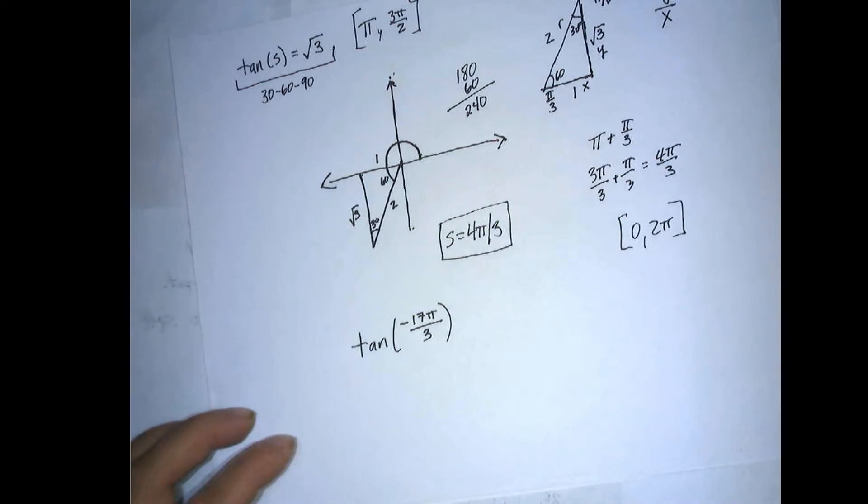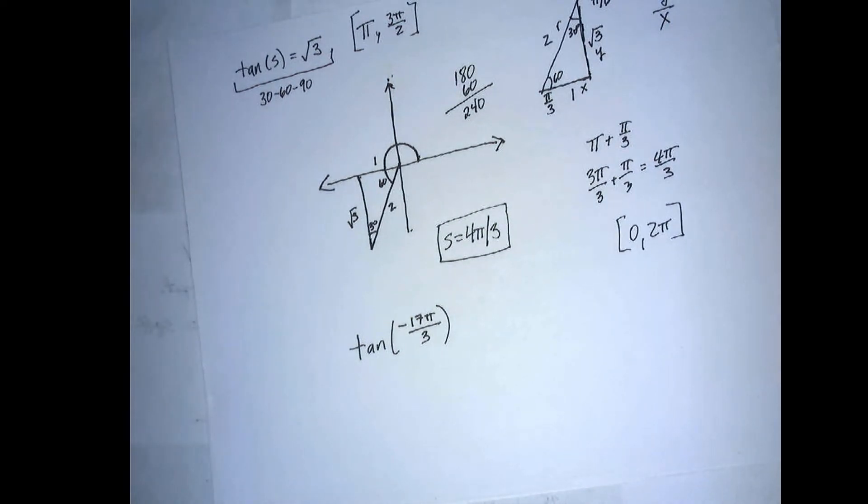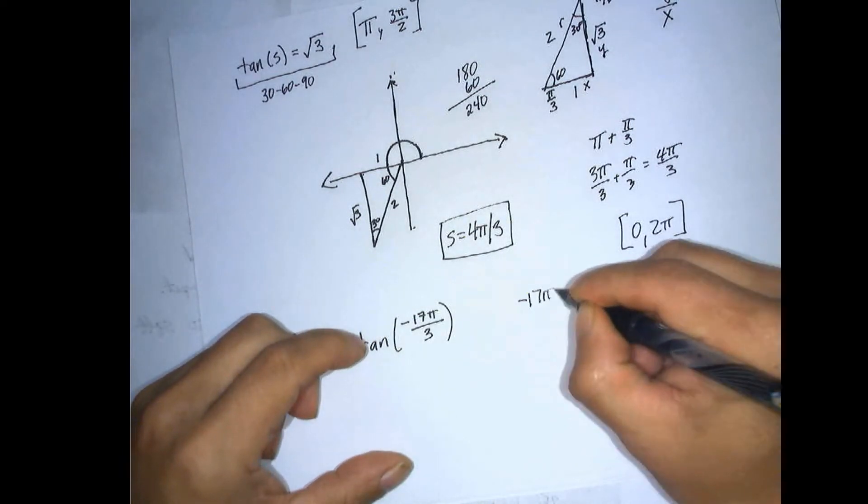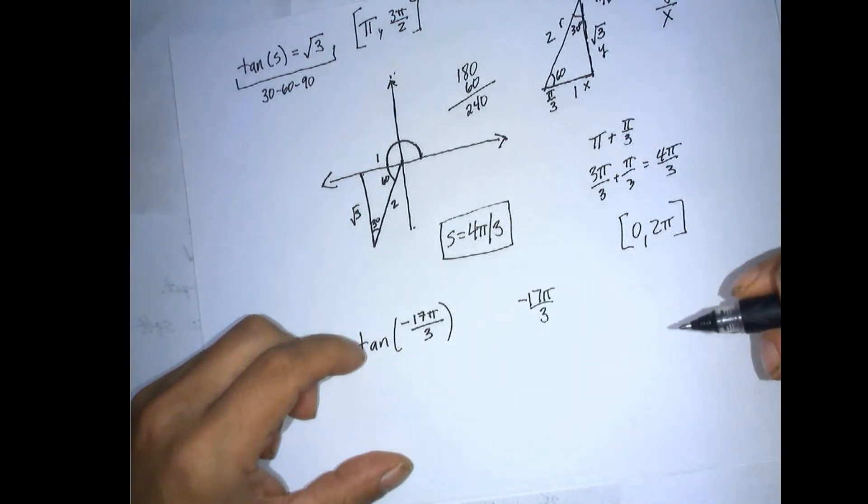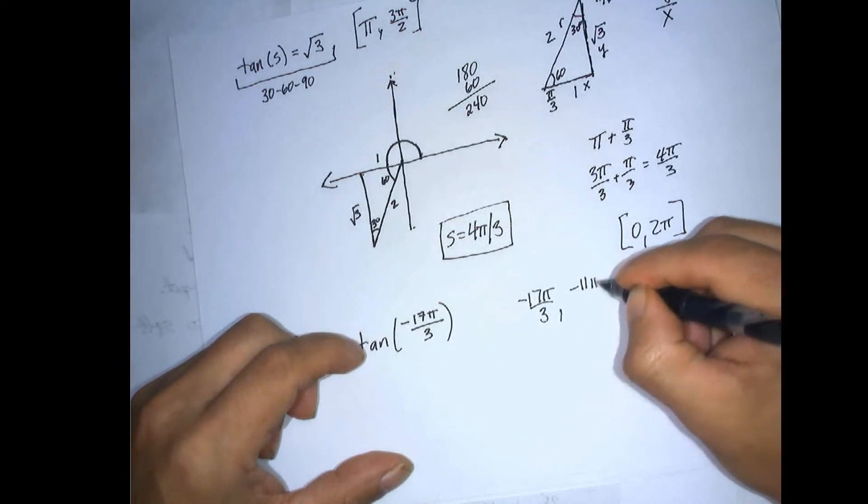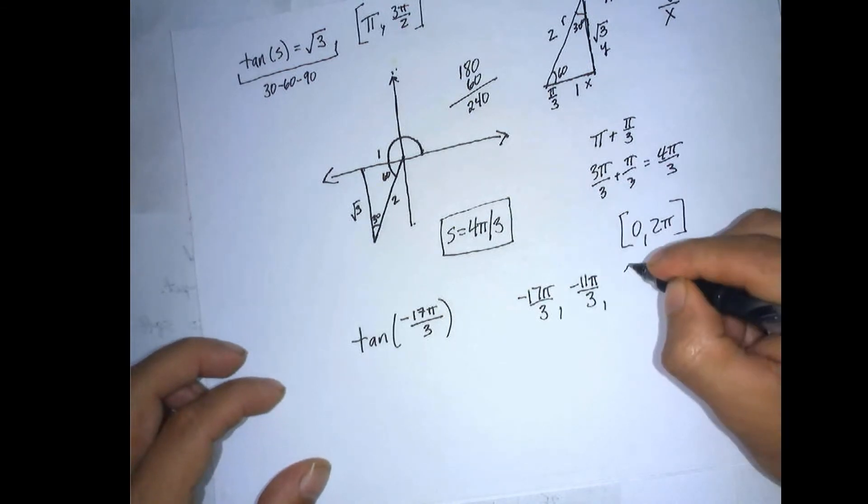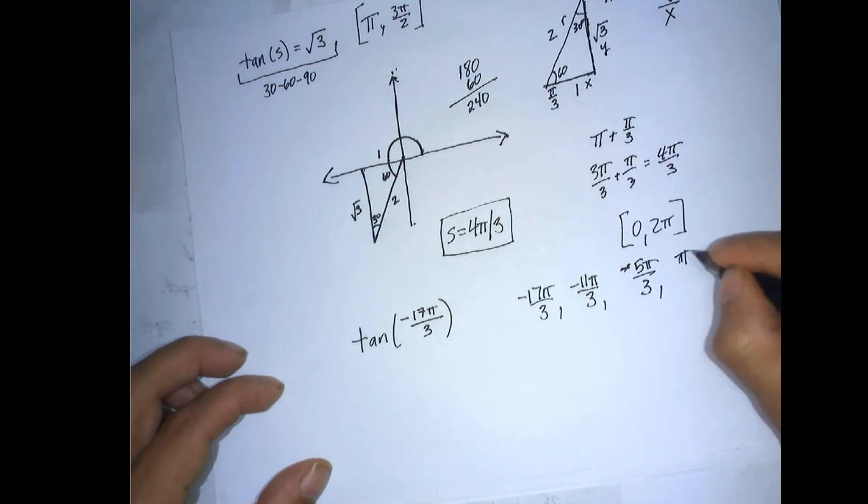Okay, so 2 pi is going to be 6 pi over 3. So negative 17 pi over 3. If we add 2 pi, then we're at negative 11 pi over 3. And if we add 2 pi, we're at negative 5 pi over 3. And if we add 2 pi again, we're at pi over 3.